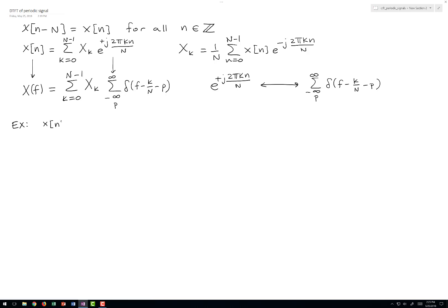The example that I'd like to consider is a periodic train of delta functions. So this is a train of delta functions that repeats every N samples. These are Dirac delta functions. So I haven't drawn all of the samples in between, but we basically have N minus 1 samples in between every one of these delta functions that you see here.